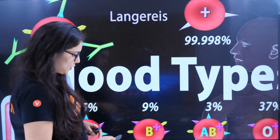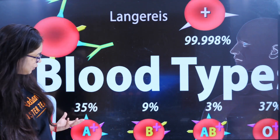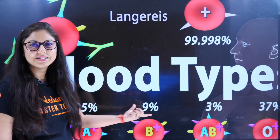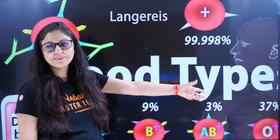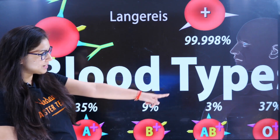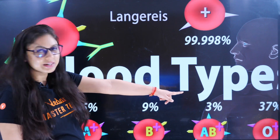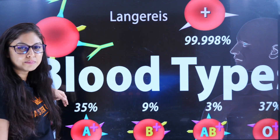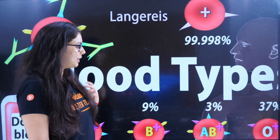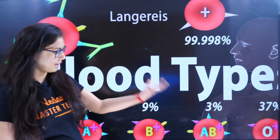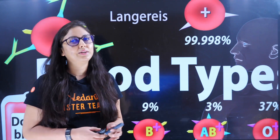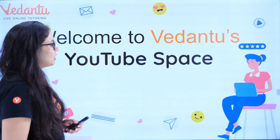Before that, as you can see, the blood group distribution in our population is shown here. O-positive is the maximum at 37%, and A-positive is 35%. We will explore this in more detail in the upcoming slides.